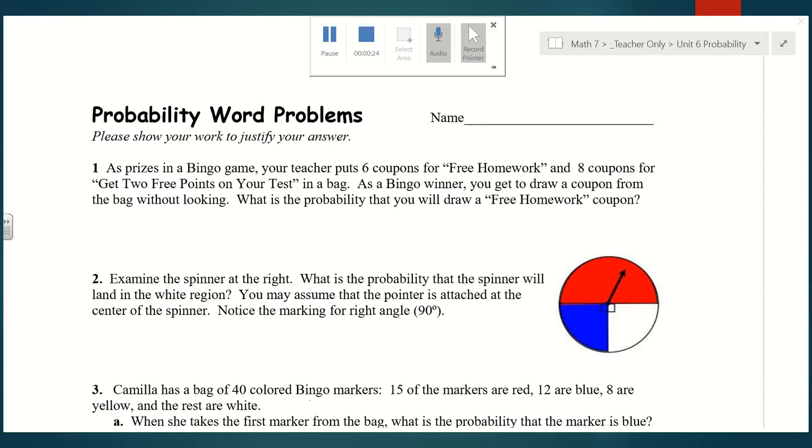Number one says, as prizes in a bingo game, your teacher puts six coupons for free homework and eight coupons for get two free points on your test in a bag. As a bingo winner, you get to draw a coupon from the bag without looking. What is the probability that you will draw a free homework coupon? First we need to figure out how many total coupons are in the bag. Six plus eight gives us 14 coupons. So the probability of getting free homework would be 6 out of 14. We can reduce that by dividing both numerator and denominator by 2 to get 3/7.